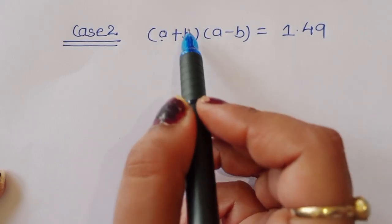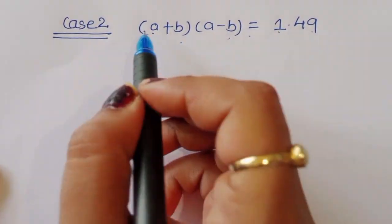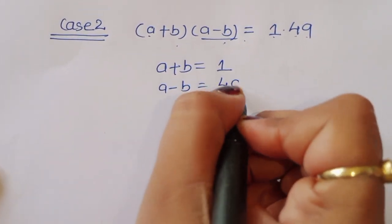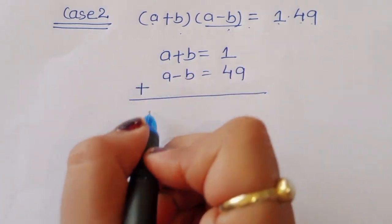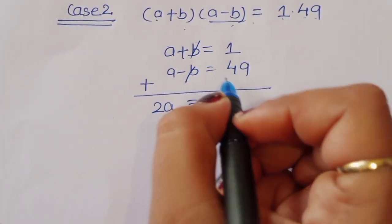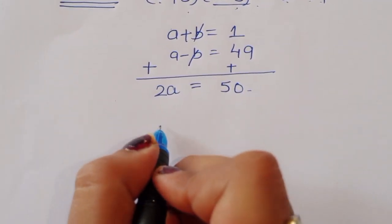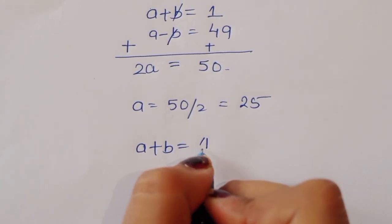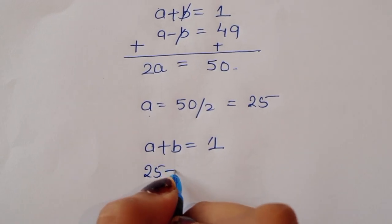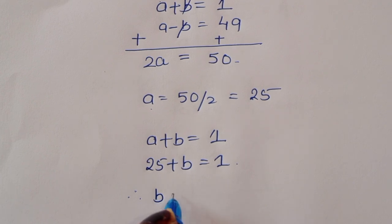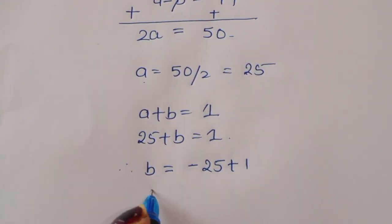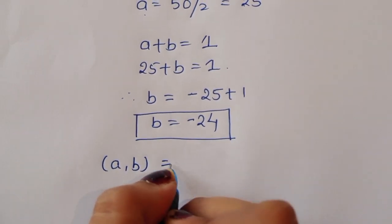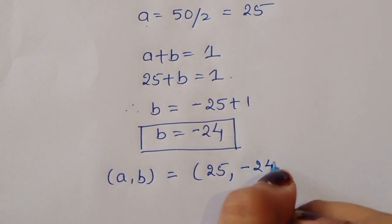Case 2: (a + b)(a - b) = 1 × 49. Comparing terms, a + b = 1 and a - b = 49. Adding these equations, 2a = 50, so a = 25. Then 25 + b = 1, giving b = -24. In Case 2, a = 25 and b = -24.